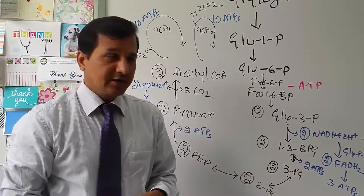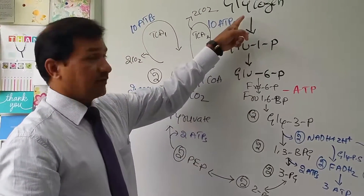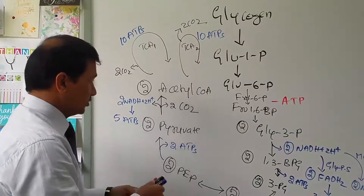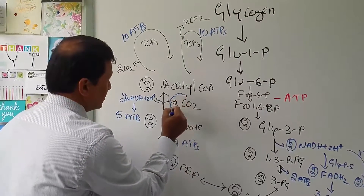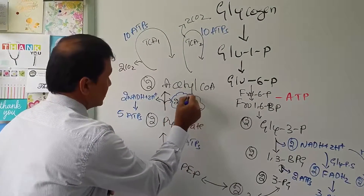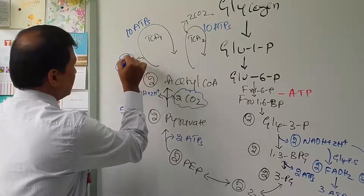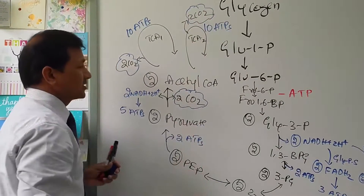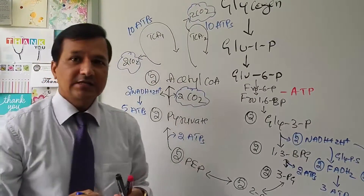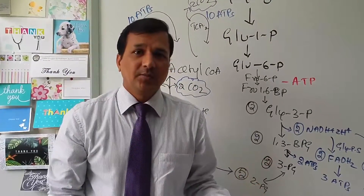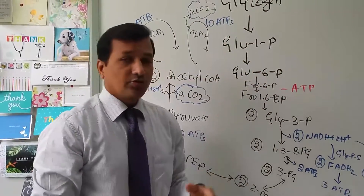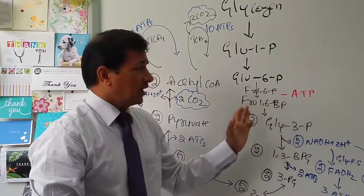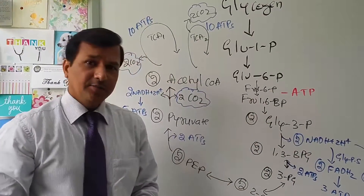Glucose-1-phosphate from glycogen is completely oxidized to 6 CO₂: 2 CO₂ from pyruvate-to-acetyl-CoA, 2 CO₂ from TCA cycle 1, and 2 CO₂ from TCA cycle 2 — totaling 6 carbons released as carbon dioxide.